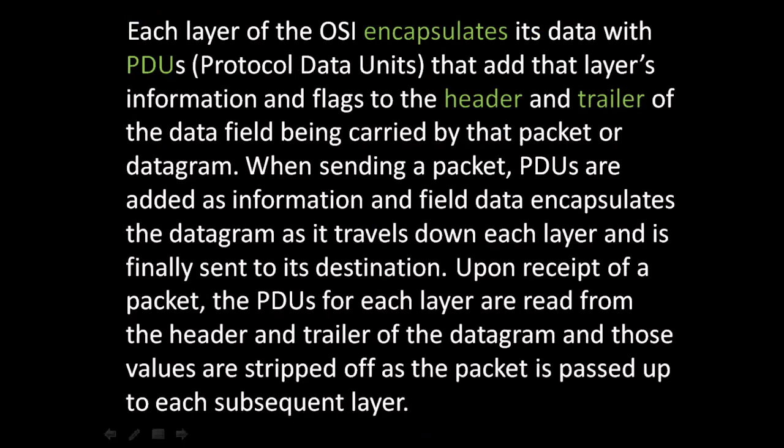Each layer of the OSI encapsulates its data with PDUs, or protocol data units, that add that layer's information and flags to the header and trailer of the data field being carried by that packet or datagram. When sending a packet, PDUs are added as the data encapsulates the program as it travels down each layer and is finally sent to its destination. Upon receipt, the PDUs for each layer are read and stripped off as the packet is passed up to each subsequent layer.